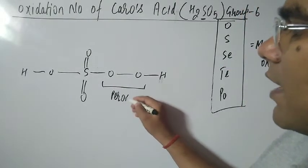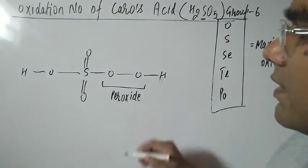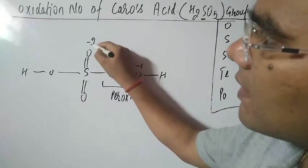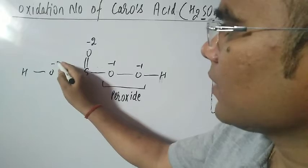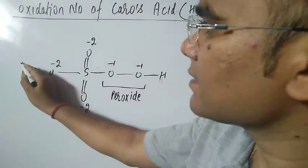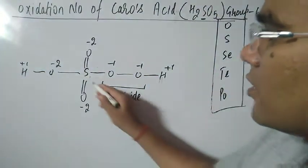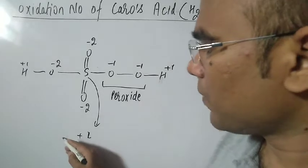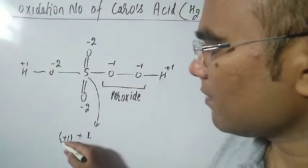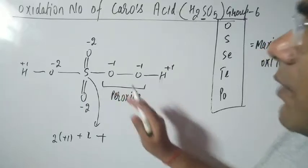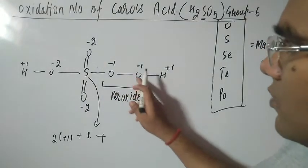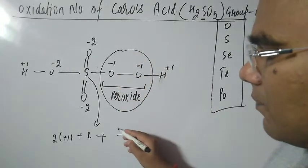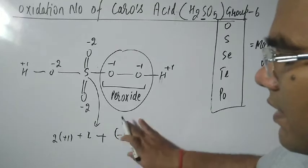The peroxide linkage has an oxidation number of minus 1 for each oxygen — so two oxygens are at minus 1. The remaining oxygens are normal oxides at minus 2. Hydrogens are plus 1 each. In peroxide, the oxidation state of oxygen is minus 1.